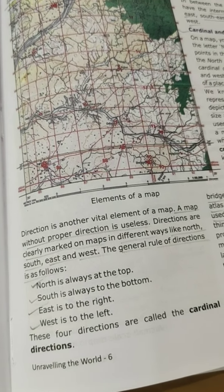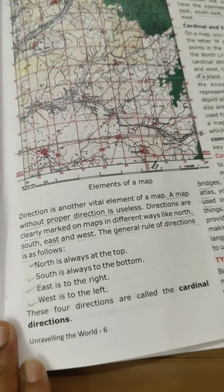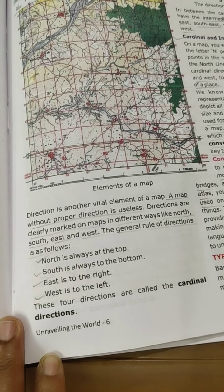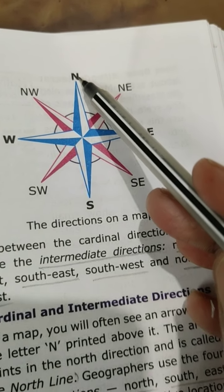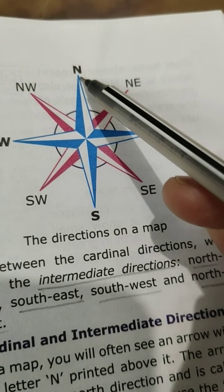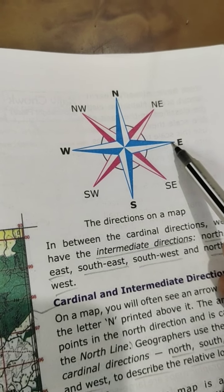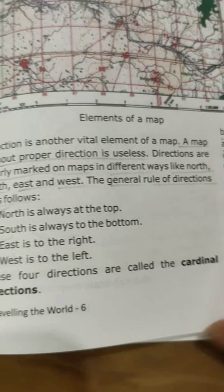Direction is another vital element of a map. A map without proper direction is useless. Directions are clearly marked on maps in different ways: north, south, east, and west. The general rule of directions is as follows: north is always at the top, south is always at the bottom, east is to the right, and west is to the left. These four directions are called the cardinal directions.